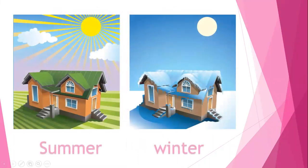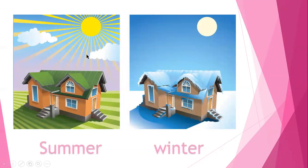Look at these pictures, please. The first picture — it's summer, so it's sunny and hot. In winter, it's snowy and rainy and very cold. In summer it's hot and sunny; in winter it's cold and snowy or rainy.